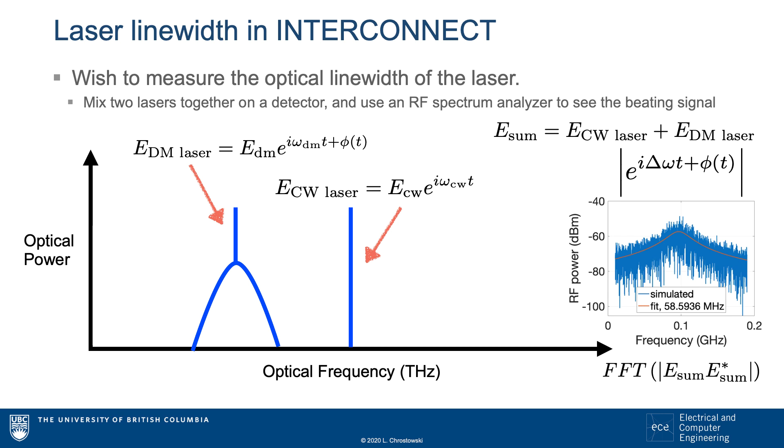If you go through the math, you will find that there are four terms. Two signals will be at the sum of the frequencies, namely twice the optical carrier, and because the detector is a low-pass filter, it will not respond to these double frequency signals.